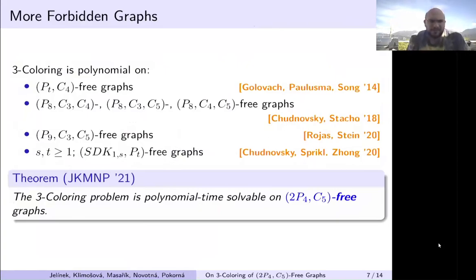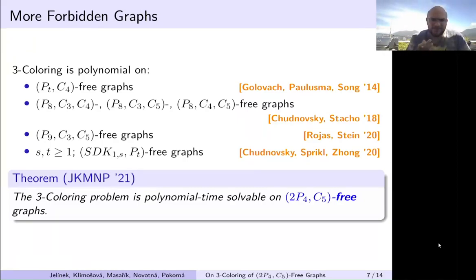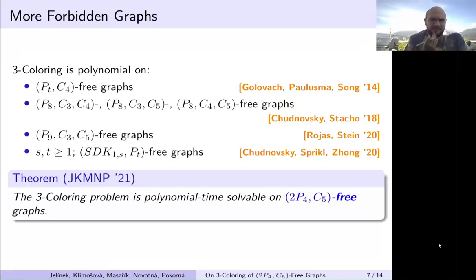We can approach this from some directions, because those are quite interesting questions — to extend polynomial results to 2P4 or P8. One simple approach could be to forbid an additional graph, usually cycles, so then there are two or three forbidden graph classes, and maybe then we can solve coloring in polynomial time.